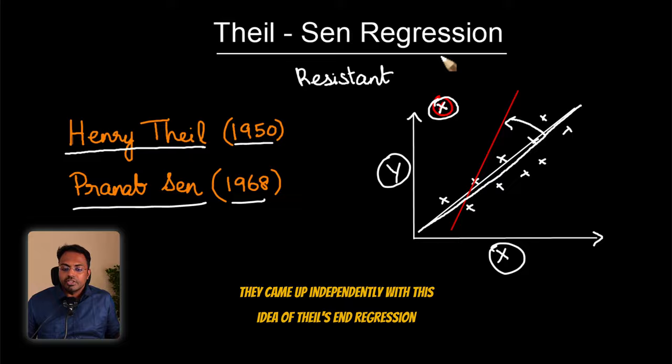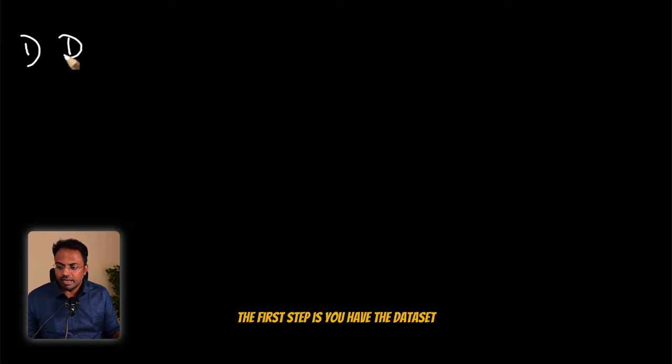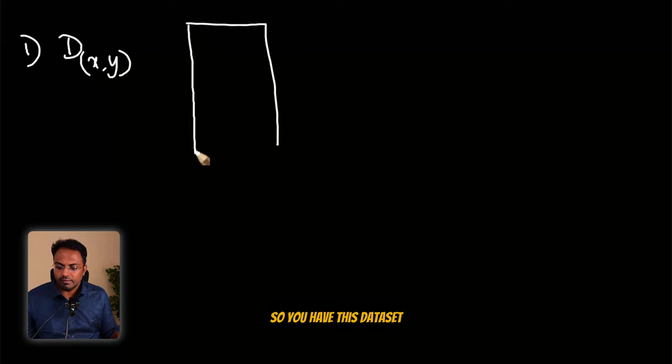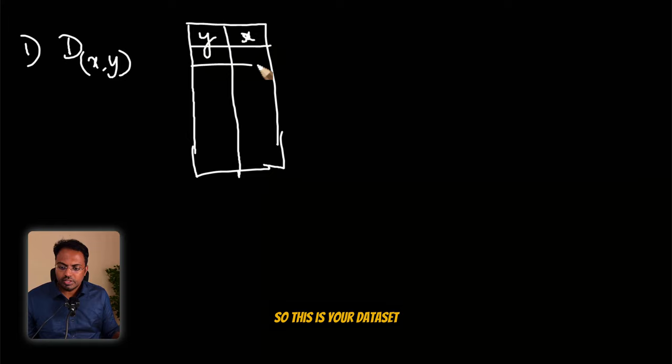So how does Theil-Sen regression work? Let's start with the data set. The first step is you have the data set D made up of x and y. So you have this data set, there can be multiple x's and y's, right. So this is your data set, you start with this.